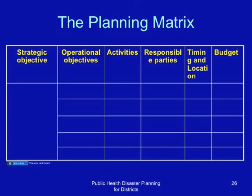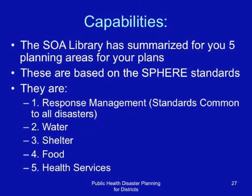The SOA library is in the form of planning capabilities, and you will plan based on capability areas based on the sphere standards. The capabilities include: response management — minimum standards common to all disasters; water, in case of a disaster situation that needs water; shelter, in case of a disaster that needs shelter; food, in case of a disaster that needs food; and health services, in case a disaster requires emergency health services or results in a disruption of existing services.